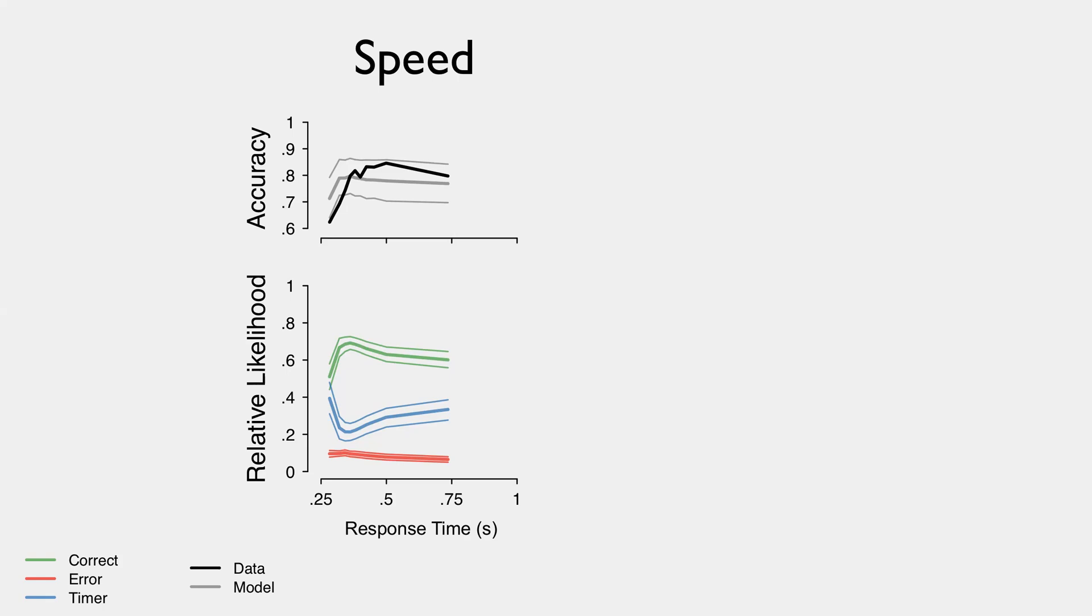So early on, we see that the correct and the timing accumulators are both about as likely to be at threshold at those very fastest responses. Then we see a rapid divergence, and the timer drops down, and the correct accumulator goes up, and then they slowly start to move back toward each other.